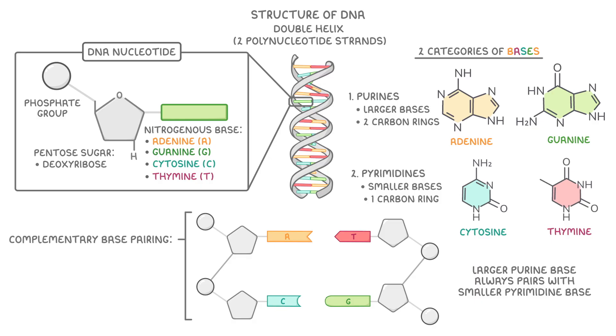This happens through what we call complementary base pairing. And specifically in DNA, adenine always pairs with thymine by forming two hydrogen bonds like this, and cytosine always pairs with guanine by forming three hydrogen bonds like this.